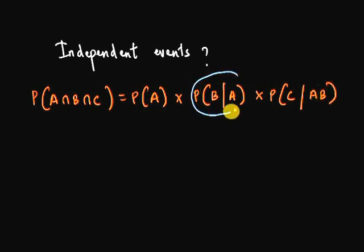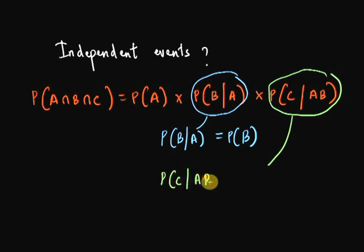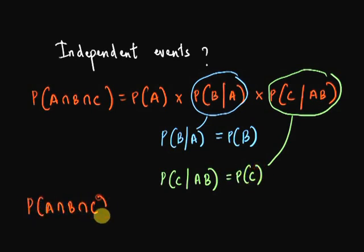So here the conditional probability of B will be nothing but the probability of B as occurrence of A has no effect on B. Similarly, the conditional probability of C will be nothing but the probability of C as the occurrence of either A or B doesn't really affect its likelihood. Then the probability of their intersection is given by P(A) into P(B) into P(C).